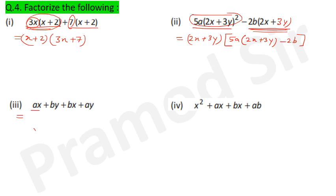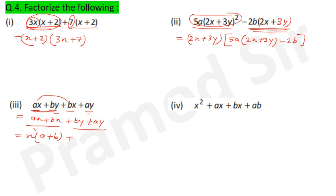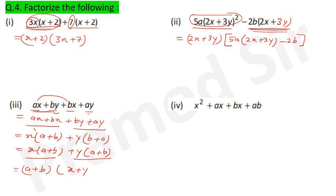Question 3 has four terms. Nothing common across all four, so group: (ax + bx) + (by + ay). Take x common from first group: x(a+b); take y common from second group: y(b+a) = y(a+b). Now take (a+b) as common: (a+b)(x+y).